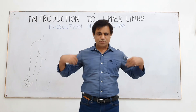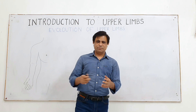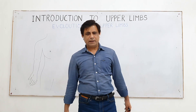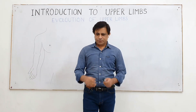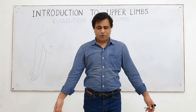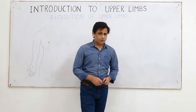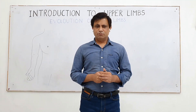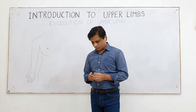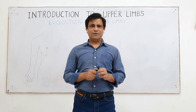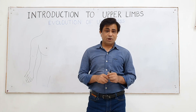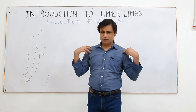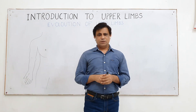These upper limbs — these are the four limbs actually — evolved from quadrupeds. The two upper limbs are suspended by the side of the body; they are freely suspended. Long, long back, evolution started from aquatic life. In aquatic life, there were pectoral fins in the fishes. They had a pectoral girdle as a fixed structure and the wings of the fins were attached to it.